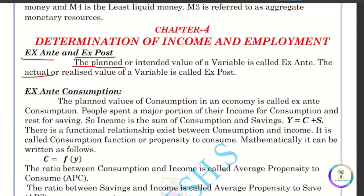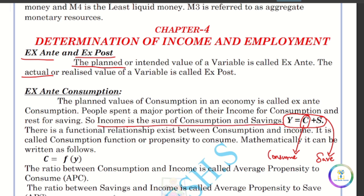Consumption is planned. If we are a consumer, we have two parts. That is Y equals C plus S. If we are a consumer, then we have savings. So what is consumption plus savings? Income is the sum of consumption and savings.